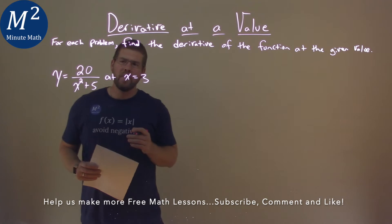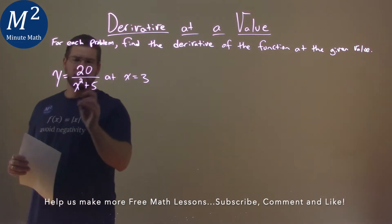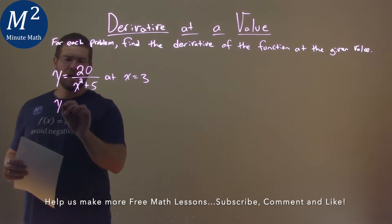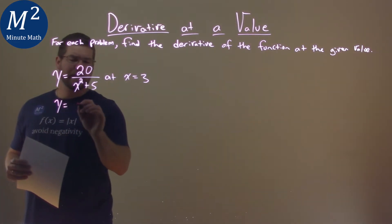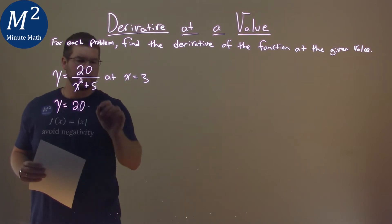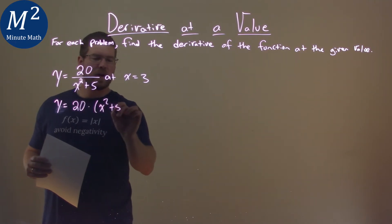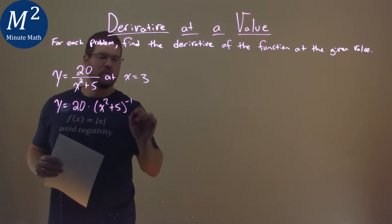One thing I like to do is rewrite this equation as y equals 20 times x squared plus 5 to the negative 1 power.